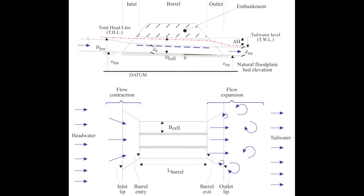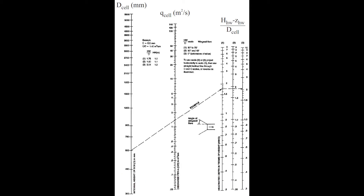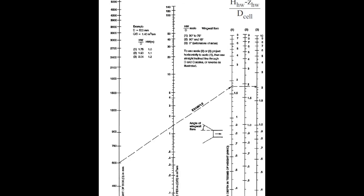The following sketches illustrate a typical operation of a multicell box culvert. The inlet control condition may also be estimated using a nomograph. This nomograph was slightly modified from the Concrete Pipe Association of Australasia, with permission, and the definitions are shown in the previous sketches. This nomograph may be applied to single cell as well as multicell box culverts.